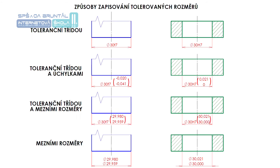Teď se podíváme na udávání přesnosti rozměru na výkrese. Z hlediska tolerancí se rozlišují rozměry tolerované – požadovaná přesnost se udává zápisem mezních úchylek bezprostředně za jmenovitý rozměr – a netolerované, jejichž přesnost je stanovena buď všeobecnou normou nebo technickými podmínkami sjednanými mezi výrobcem a zákazníkem. Třetí rozměry jsou informativní a ty toleranci nemají.